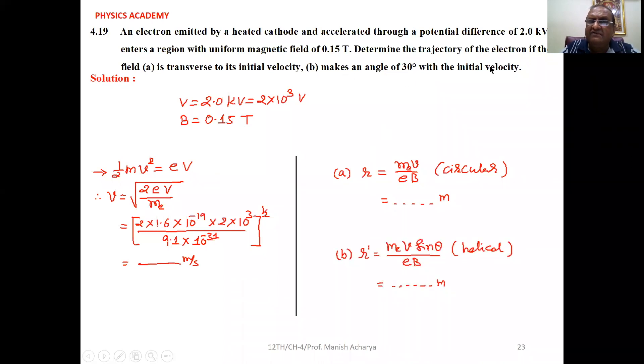In the second case, when the velocity makes an angle 30 degrees with the field, the motion will be helical. The radius of the helix is R dash equals m v sin theta upon eB. We calculated m v upon eB already. Sin theta is sin 30, which equals 1 by 2, means R dash equals R by 2. Calculate it to get the answer.